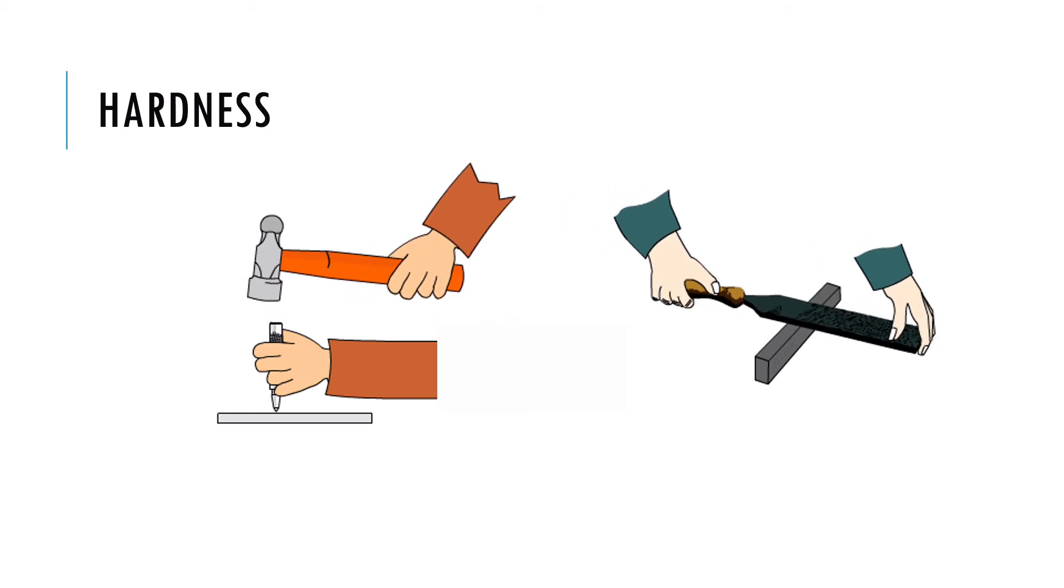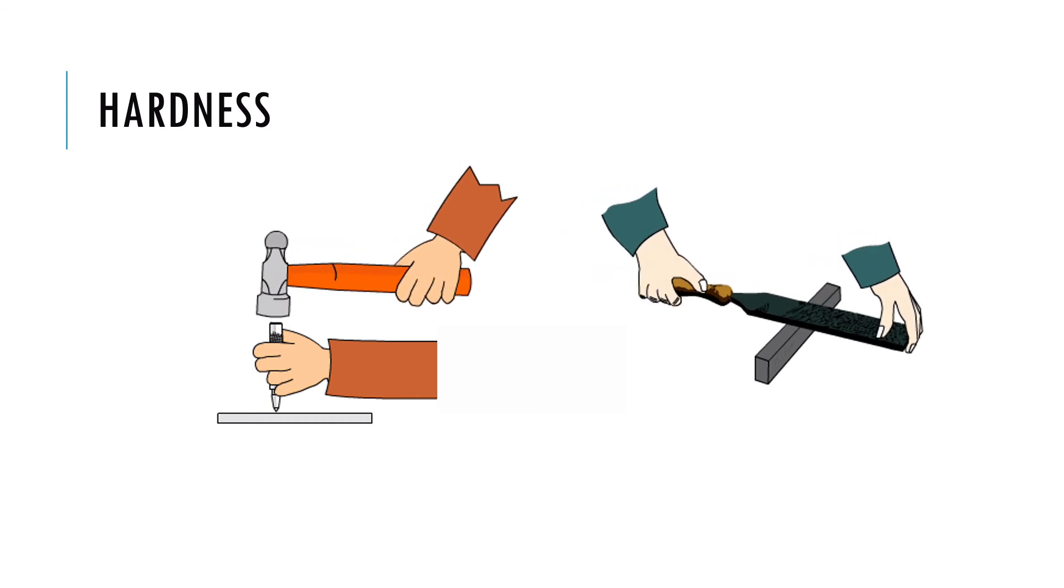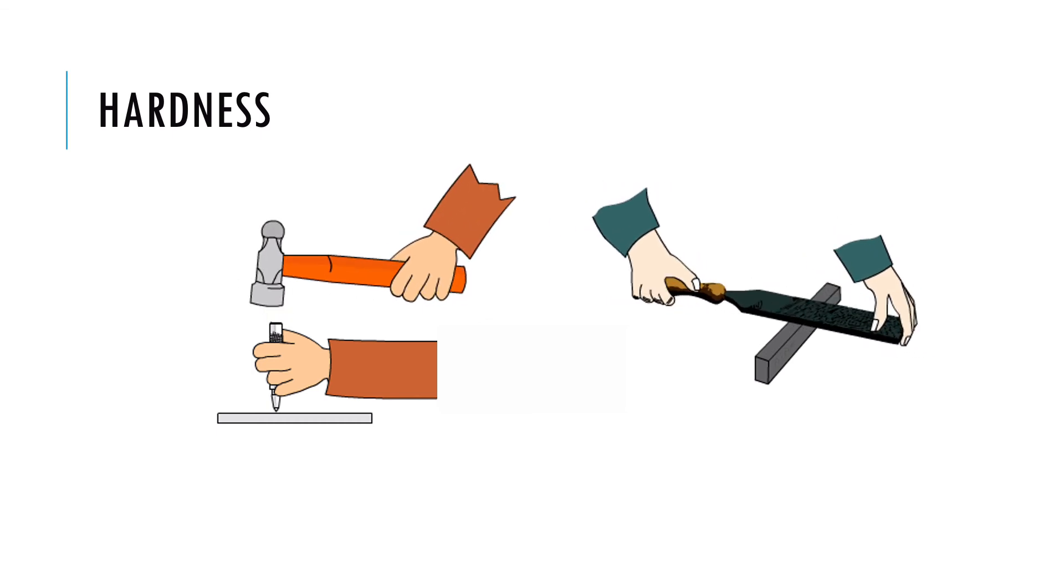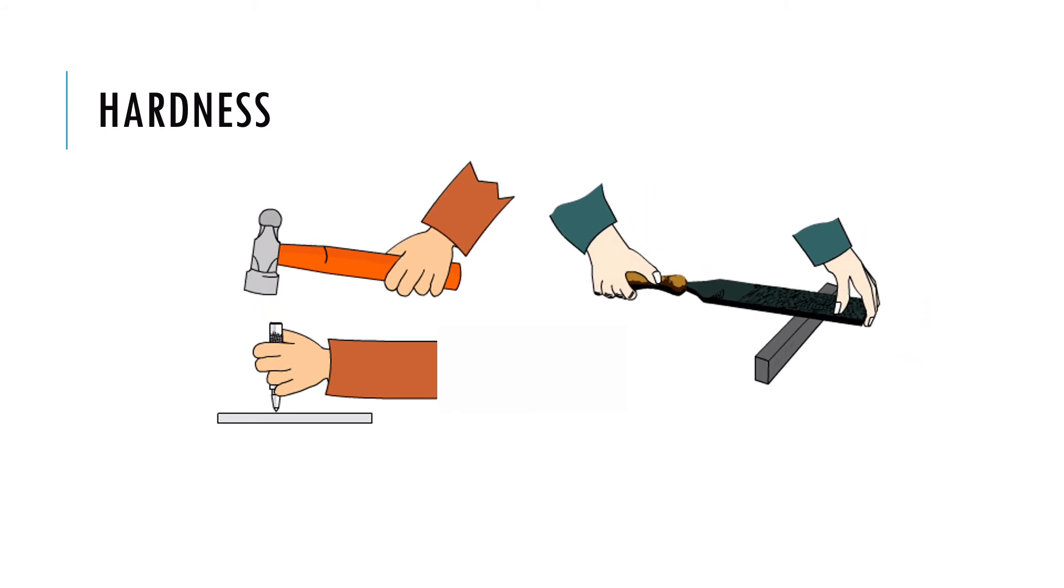By scratching copper, brass and steel with a file, we can easily compare the hardness of these materials depending upon the metal removal amount. Less the metal removes, more the hard is material.